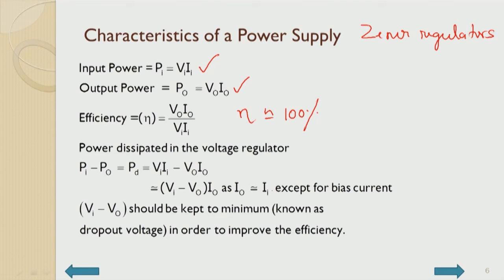If I_out is made close to II to improve efficiency, then (VI − V_out)·I_out is the power dissipated, and that power is primarily dissipated in the pass transistor. The way to maintain good efficiency is to keep this difference voltage (VI − V_out) to the minimum. This is known as the dropout voltage and is one of the important criteria in design to improve efficiency.